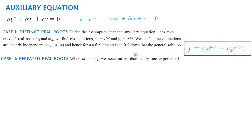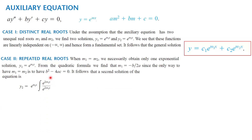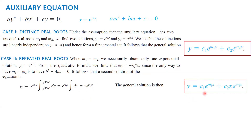Case 2 is when m₁ and m₂ are equal — a repeated real solution. Here, y₁ = e^(m₁x), and using the reduction of order method with e^(m₁x) times the integral of e^(−2m₁x) / e^(2m₁x) dx, the two terms cancel, leaving the integral of dx, giving the second solution xe^(m₁x). So the general solution for repeated real roots is y = c₁e^(m₁x) + c₂xe^(m₁x).